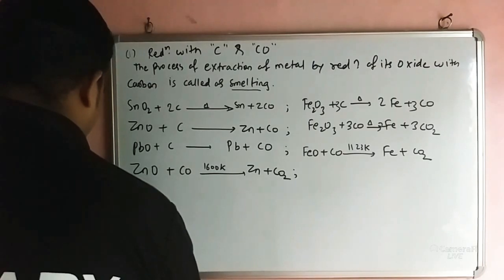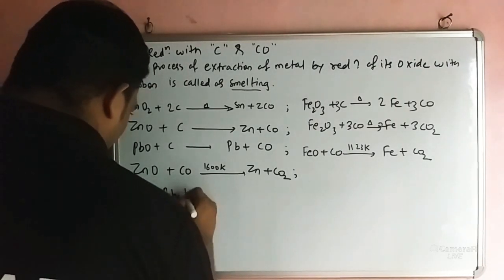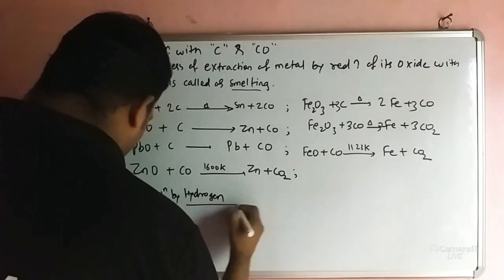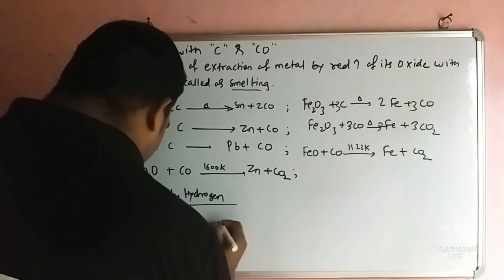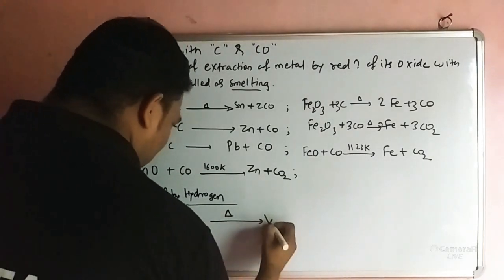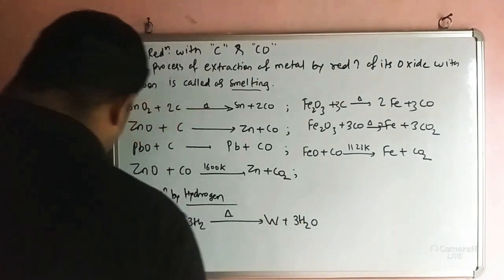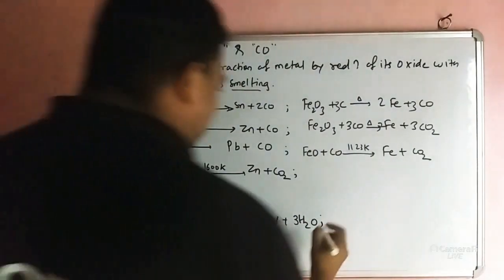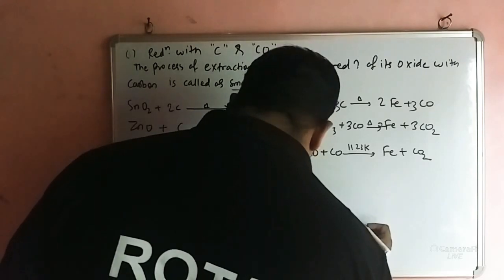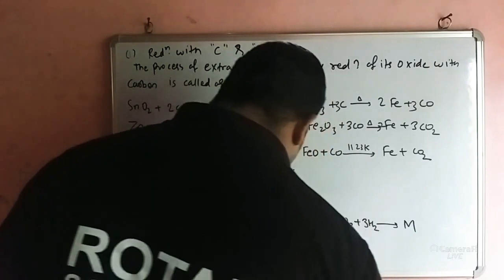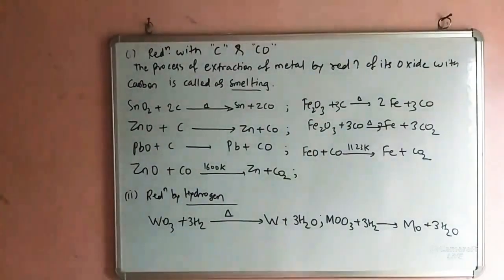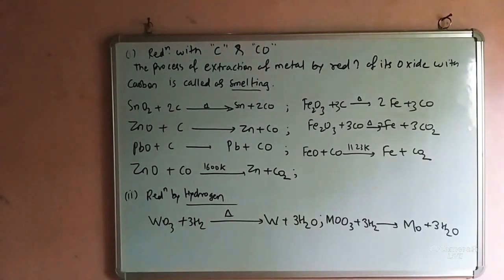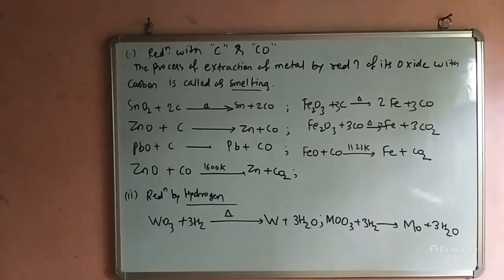Next we discuss reduction by hydrogen. Tungsten compound (WO3) treated with hydrogen as a reducing agent gives W + 3H2O. Molybdenum oxide (MoO3) + 3H2 gives Mo + 3H2O. These are important reactions — write them carefully for both tungsten and molybdenum.